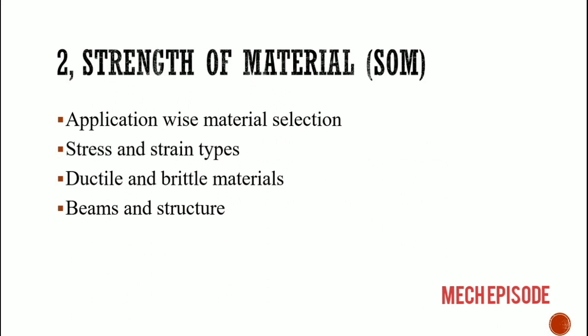The second topic is strength of materials. Strength of material contains application-wise material selection, stress and strain types, ductile and brittle materials, beams and structures. For material selection, we should know about material properties, advantages, and disadvantages.